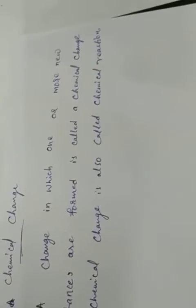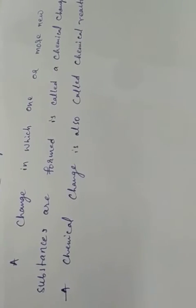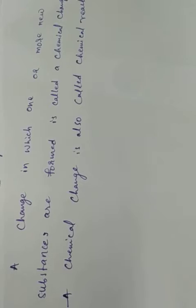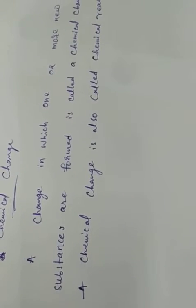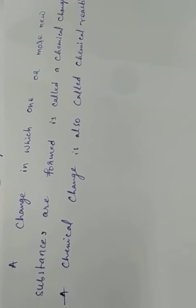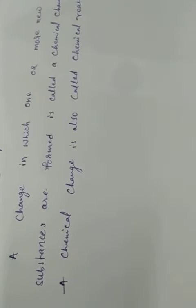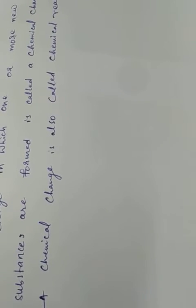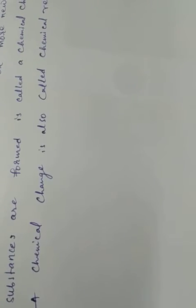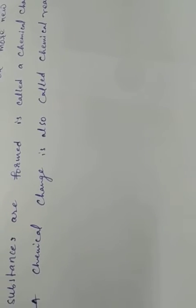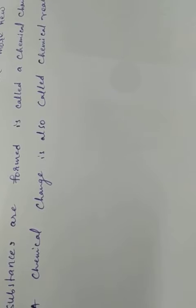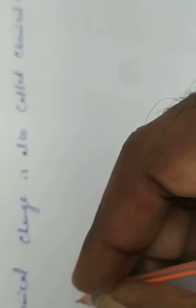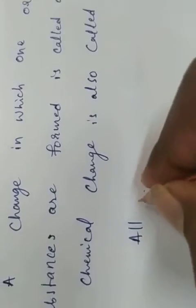Chemical changes are very important in our lives. All new substances are formed as a result of chemical changes. For example, digestion of food in our body, ripening of fruits, and fermentation of grapes — these all happen due to a series of chemical changes.